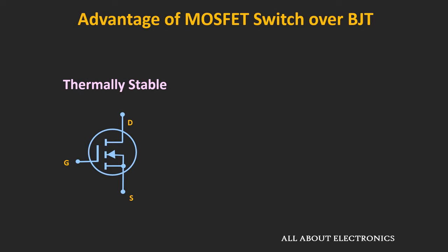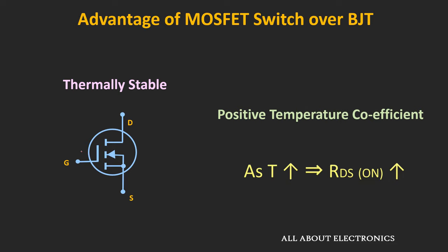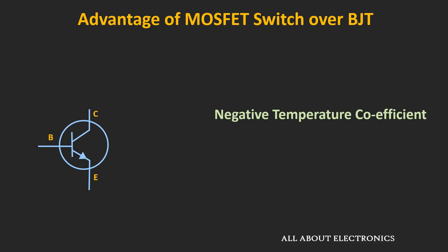Moreover, MOSFETs are more thermally stable compared to BJTs. The reason is the MOSFET has a positive temperature coefficient — during the ON condition, as the temperature of the MOSFET increases, the ON resistance will also increase, which reduces the drain current ID, and because of that the temperature of the MOSFET will reduce. On the other hand, BJTs have a negative temperature coefficient — as temperature increases, the collector current IC will also increase, further increasing the temperature. If the generated heat is not dissipated properly, it may lead the BJT into thermal runaway. So MOSFETs are more thermally stable than BJTs.